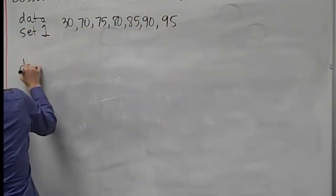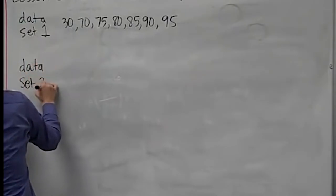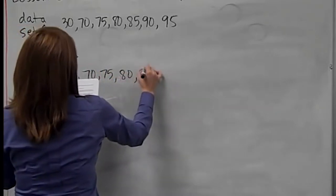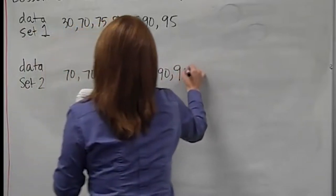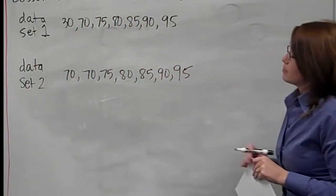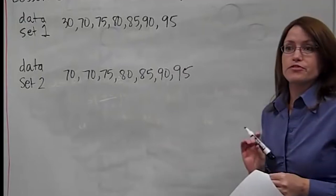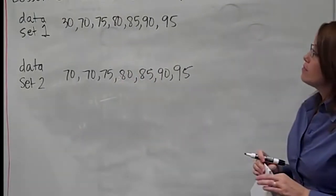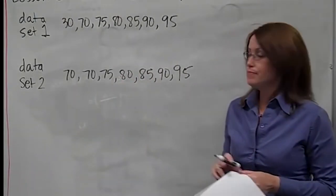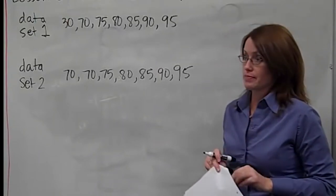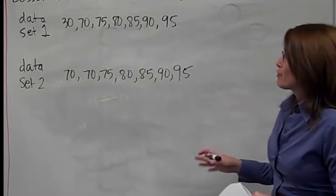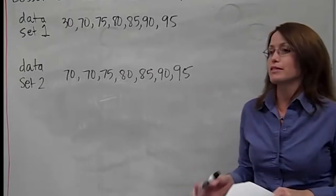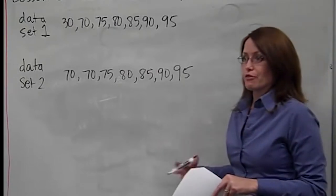Now we need to talk about how things are spread out. Imagine that you had these two data sets. The two data sets are very similar — the only difference is the lowest number in each list. The first data set has a lowest number of 30, and the second one has a lowest number of 70. Everything else is the same. I went ahead and put it in order for you, although the order doesn't really matter as much here, but it's still helpful.